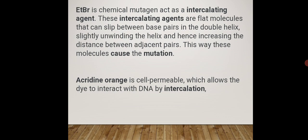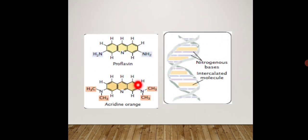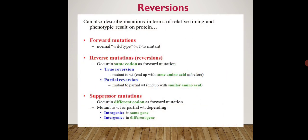Acridine orange is cell permeable, which allows the dye to interact with the DNA by intercalation. Its structure consists of three polycyclic rings, and it also inserts between the base pairs and disrupts the structure of DNA. Another example is proflavin, which is also a three-ring structure.